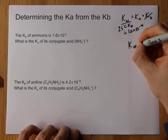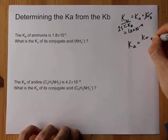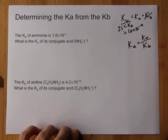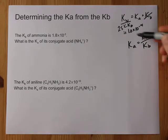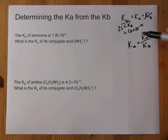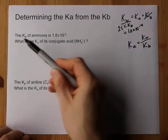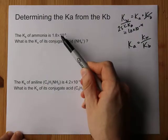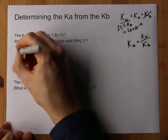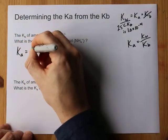Let me rewrite that for you. Ka is Kw divided by Kb and you have to look that up or just know that it's 1.0 times 10 to the negative 14. So you're gonna be given a number for Kb. There it is. Divide Kw by it. Shall we do this together? Yes we shall.